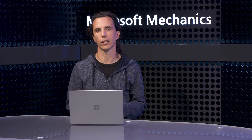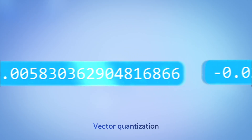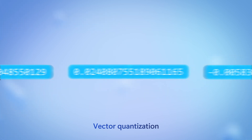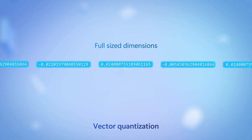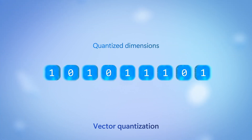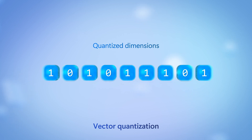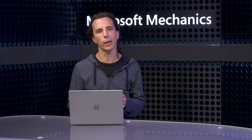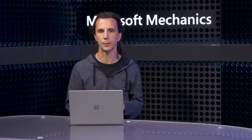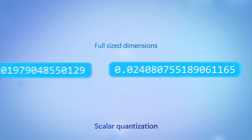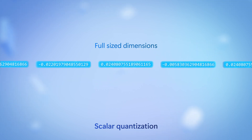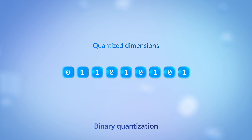If a vector is a long list of numbers that we refer to as dimensions, you can think of quantization as a way to make each number use less space. In Azure AI Search, we offer two types of quantization: scalar and binary quantization. Scalar quantization can take each number in the vector and effectively compress it to be a narrower numeric type. The binary quantization option then takes this even further and makes each dimension a single bit — a one or a zero.